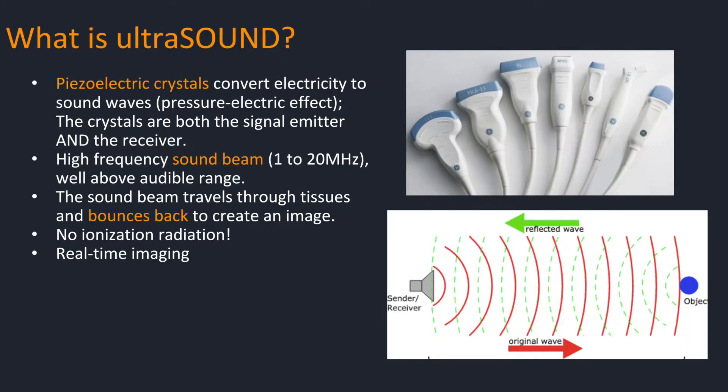As the name suggests, ultrasound is actually sound. A piezoelectric crystal in the transducer converts electricity to sound. The sound, which is well above the audible range, progresses through the tissue and bounces back, or echoes, from the different tissues it encounters. The reflective waves then return to the transducer, which converts the sound back into electricity, and the computer creates an image.